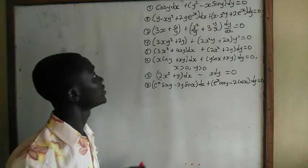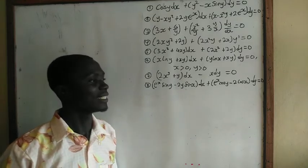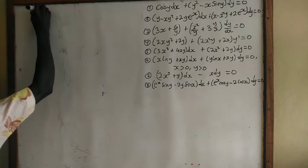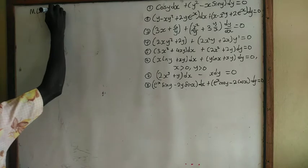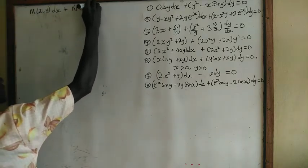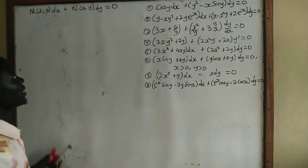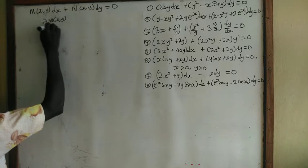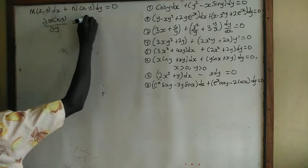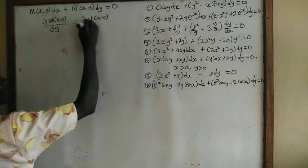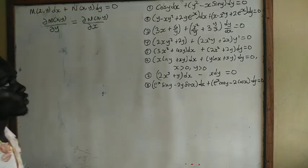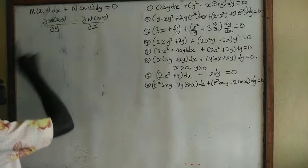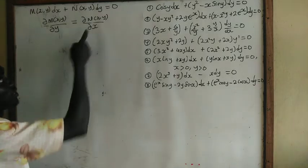Join me as we go through each of the seven questions one after the other. If we have M of xy dx plus N of xy dy equal to zero, then this differential equation is exact if and only if the partial derivative of M(xy) with respect to y is equal to the partial derivative of N(xy) with respect to x.